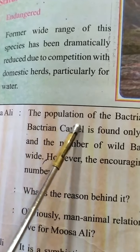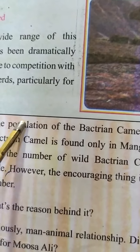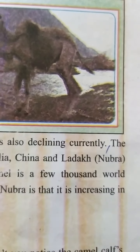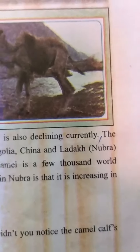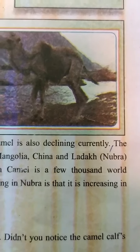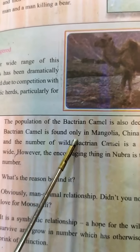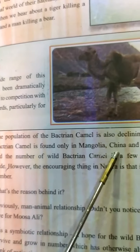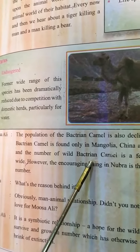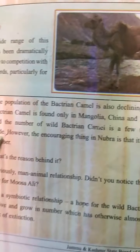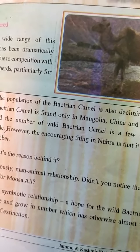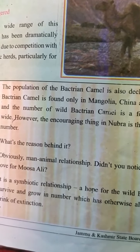The population of the Bactrian camel has also declined currently. The Bactrian camel is found only in Mongolia, China, and Ladakh, Nubra, and the number of wild Bactrian camels is just a few thousand worldwide.